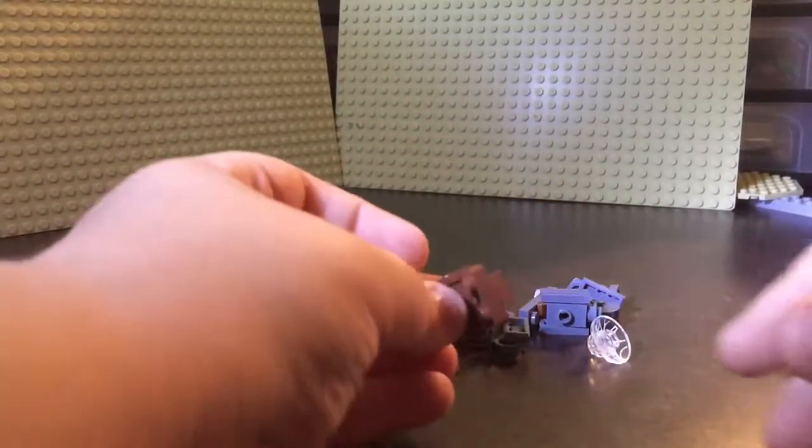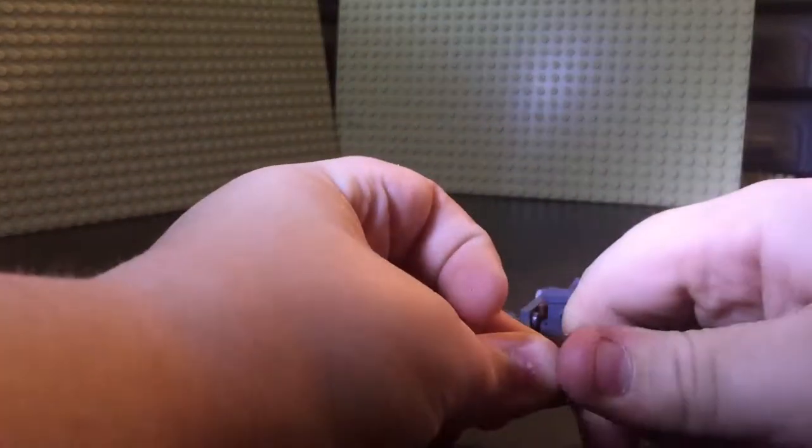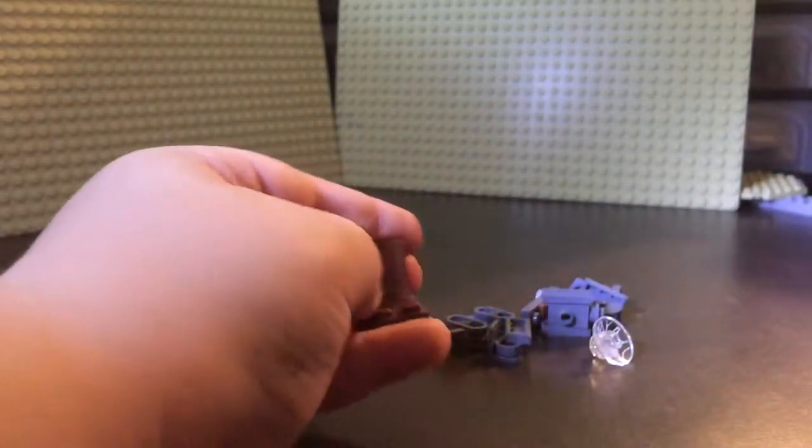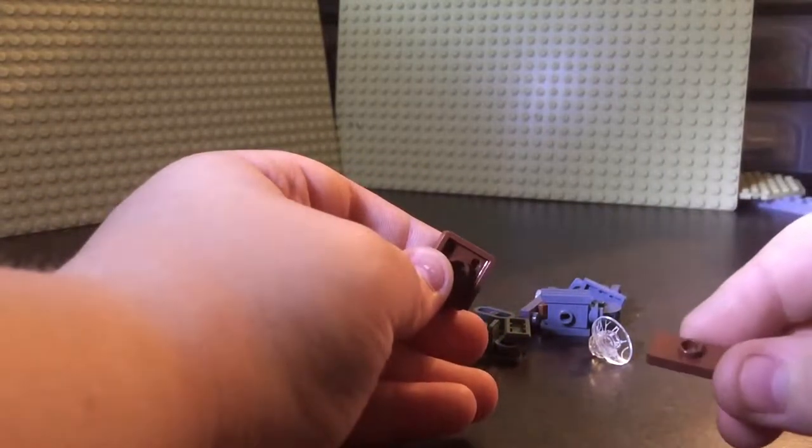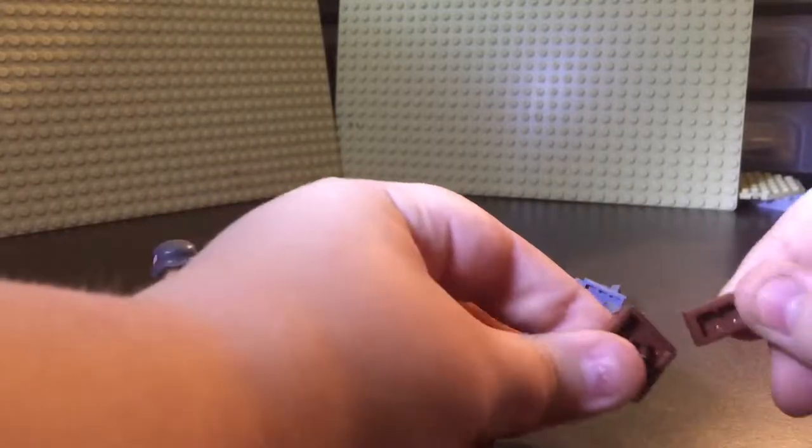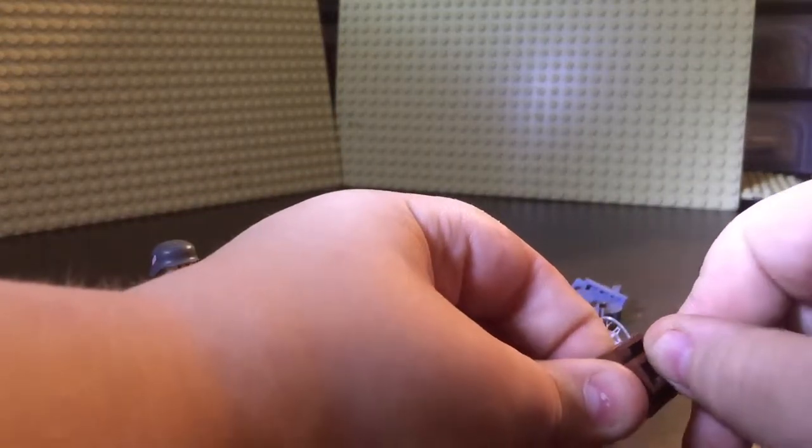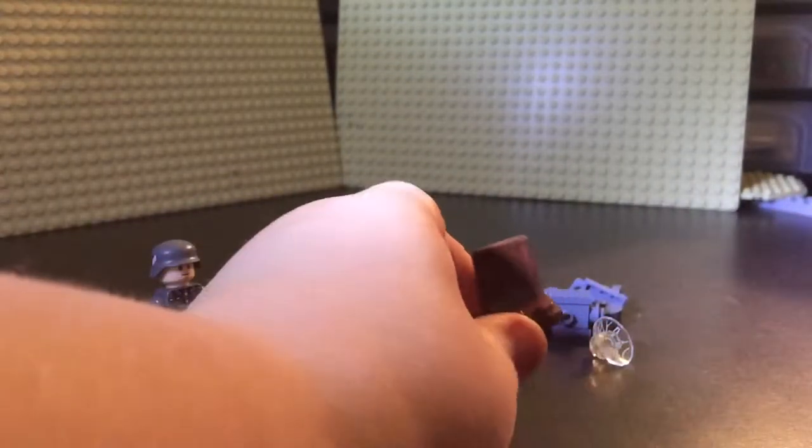First, for this seat, we need one brown seat piece and one brown 1x2 jumper plate. Put them on like that, set that down.